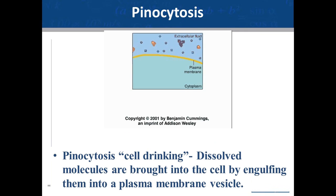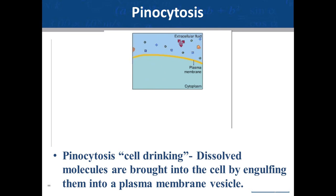Moving on to pinocytosis, or cell drinking. The difference is that the material being brought into the cell is dissolved in liquid. In pinocytosis, the cell engulfs extracellular fluid including molecules such as sugars and proteins, which enter inside a vesicle. Epithelial cells in capillaries use pinocytosis to engulf the liquid portion of blood at the capillary surface; the resulting vesicles travel across the capillary cells and release their contents to surrounding tissues while blood cells remain in the blood.